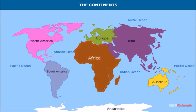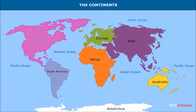The second largest continent is Africa; the equator runs almost halfway through this continent. North America is the world's third largest continent. The continents of North America and South America are linked by a narrow stretch of land across Panama, known as the Isthmus of Panama.